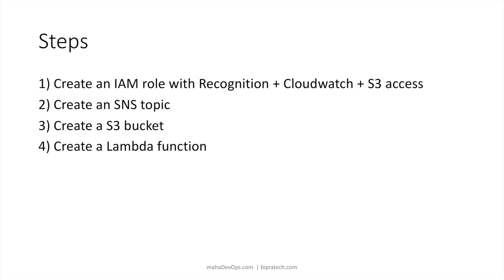Here are the steps. First, I will create an IAM role with Rekognition, CloudWatch, and S3 access for my Lambda function. Second, I will create an SNS topic to notify myself by email whenever an image is uploaded and image recognition is done. Then I'll create an S3 bucket to upload pictures, and finally create a Lambda function with the logic to perform the image recognition.